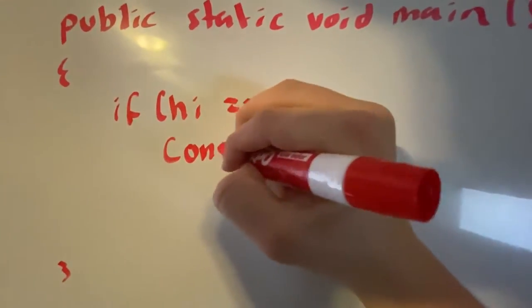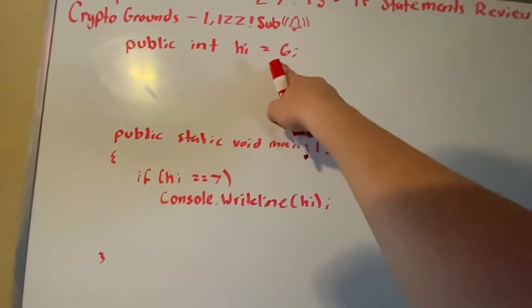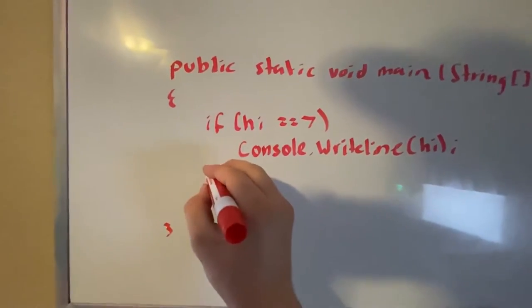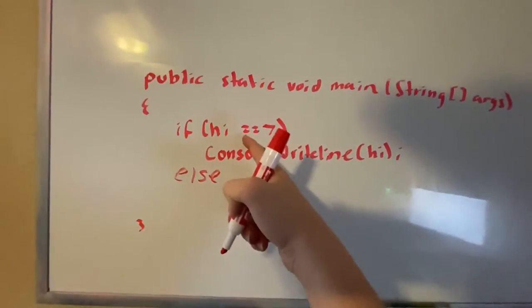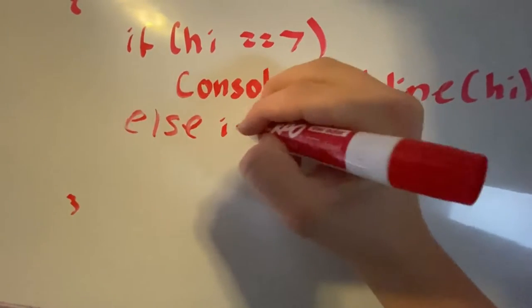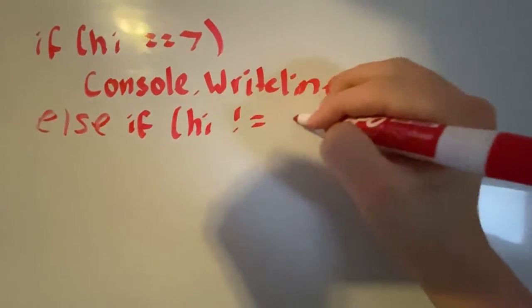Since it's false, it's not going to do any of that. Now we can also have an else statement where otherwise, if it's not 7, this is honestly the same thing as else if hi is not equal to 7.